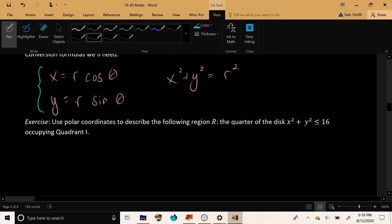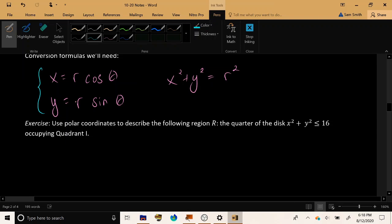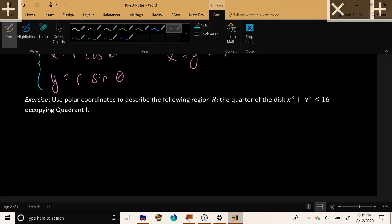Now let's do a quick exercise. Use polar coordinates to describe the following region r: the quarter of the disk consisting of x squared plus y squared less than or equal to 16 occupying quadrant 1.